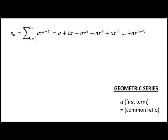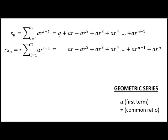Now bear with me — let's suppose we want to find R times S of N. We're just going to multiply each term by R. If you multiply a term by R, you just get the next term, so it's basically the same thing just shifted over. Now let's take this top expression S of N minus R times S of N and subtract them term by term.